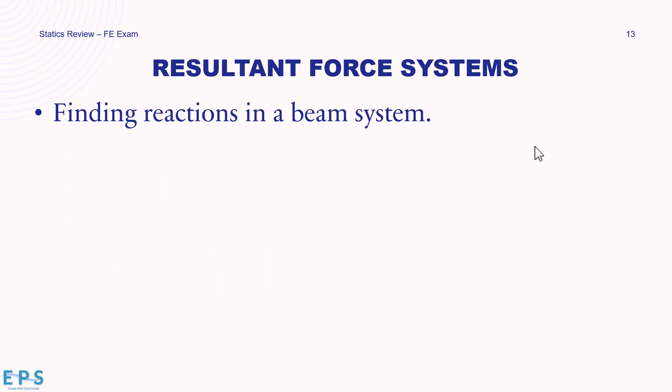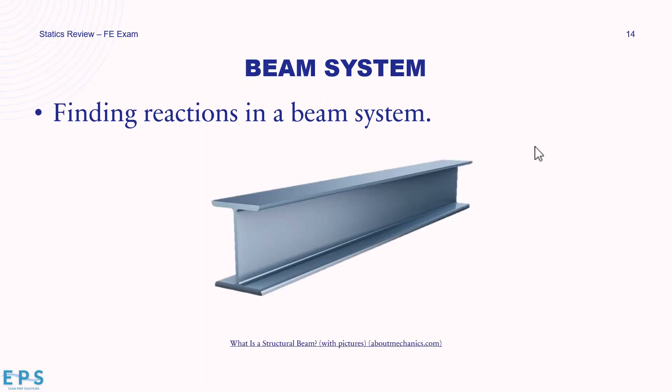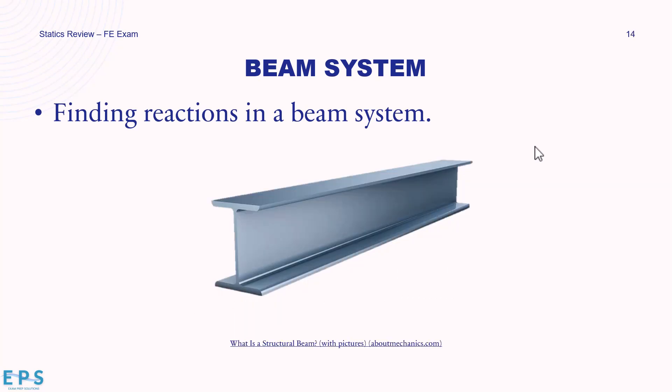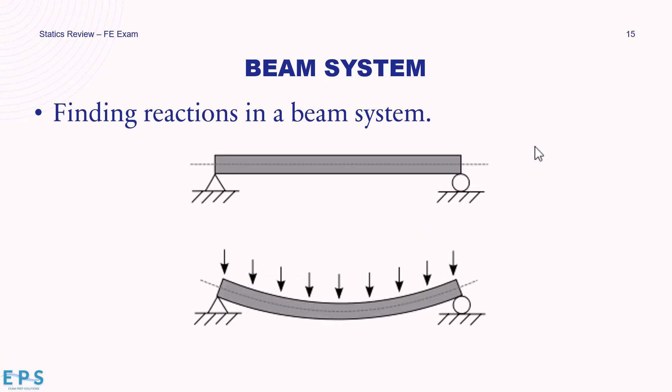Now, a more complex problem: finding reactions in a beam system — a very common FE exam problem involving summing forces and using the moment arm. When we do a beam problem we look at the side view. A beam placed on a building with a floor on top will have downward forces acting on it, causing it to bend and creating moments. We need to find the reaction forces on either side of the beam that keep it from sinking.